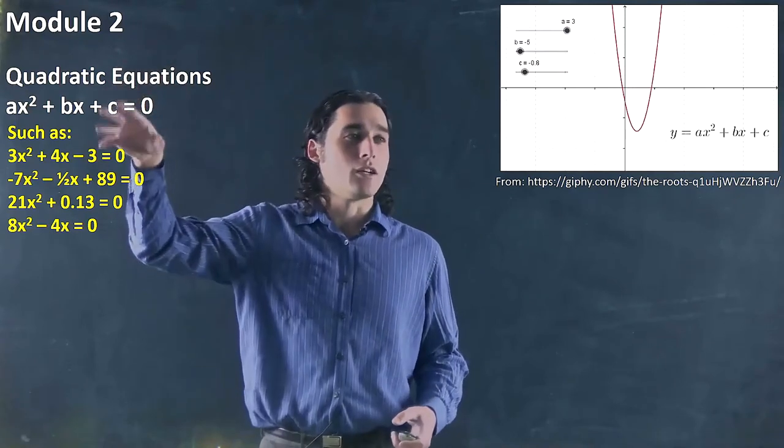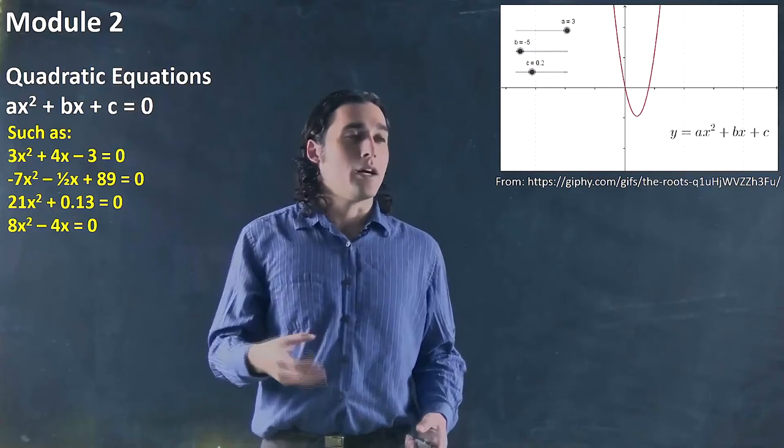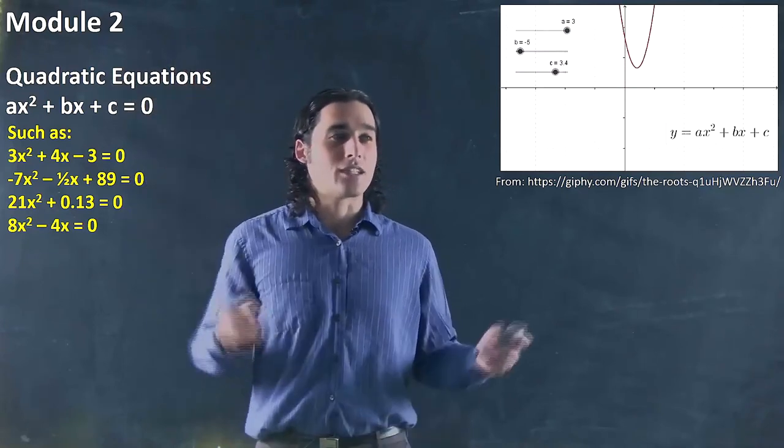In fact if we have a equal to zero, we get back to a line. But normally if we're looking at quadratic, we're going to actually have some parabola.